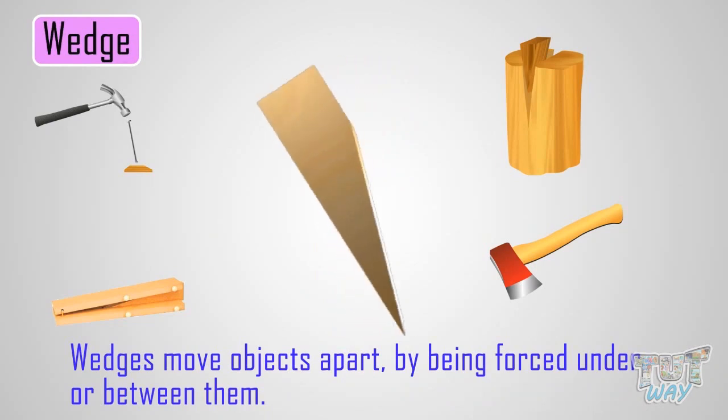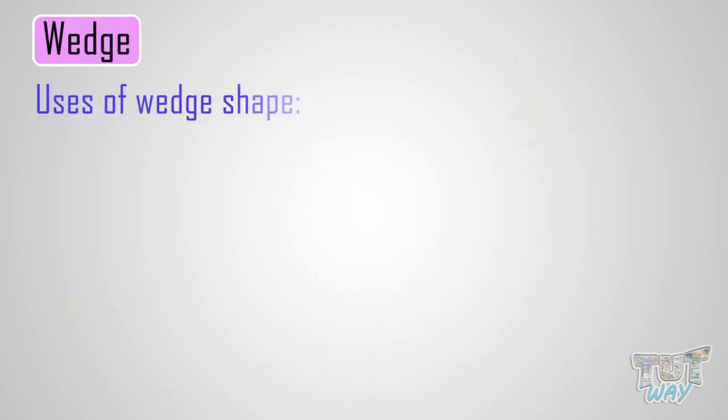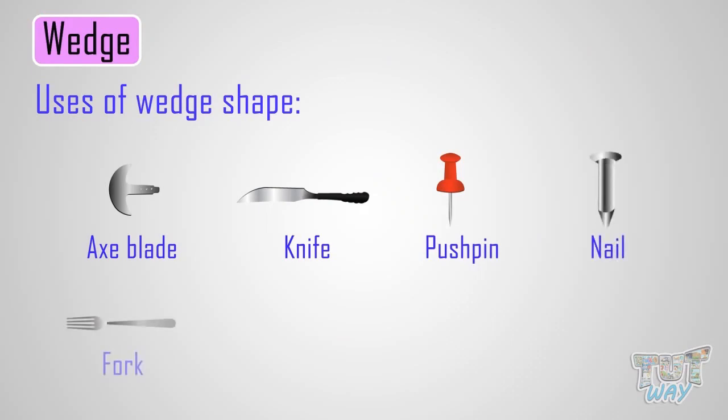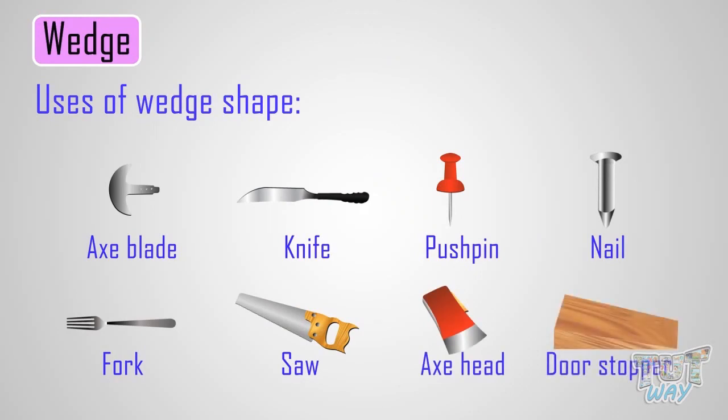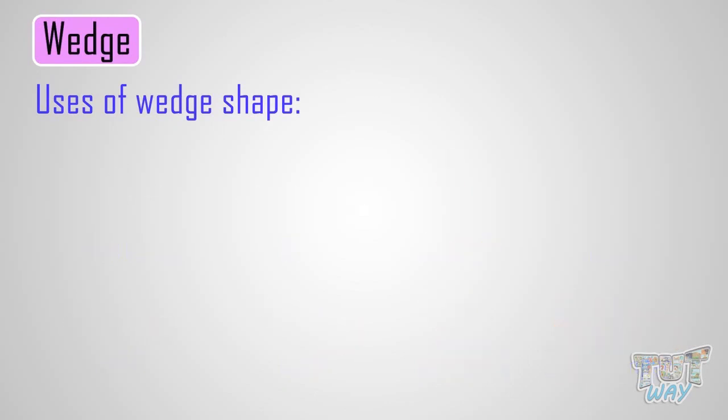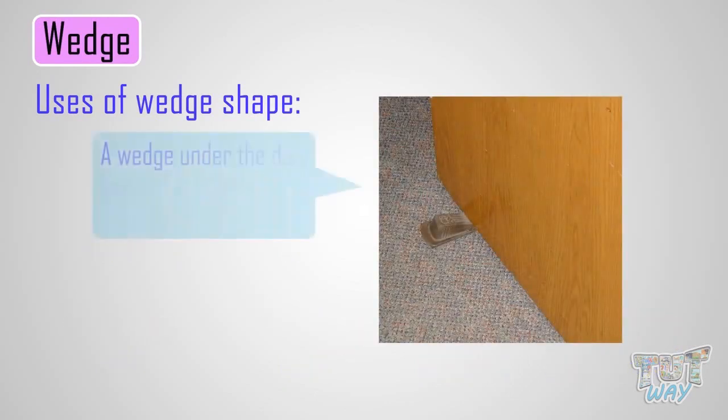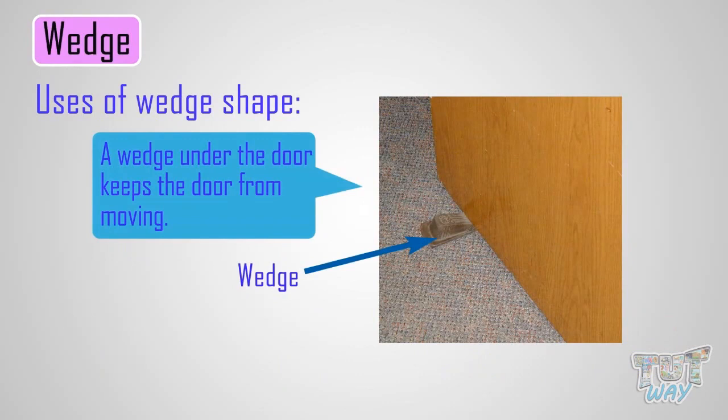Here are some uses of this wedge shape: an axe blade, a kitchen knife, a pushpin, a nail, a fork, a saw, axe heads, and door stops are examples of a wedge. A nail secures things. A wedge under a door keeps the door from moving.